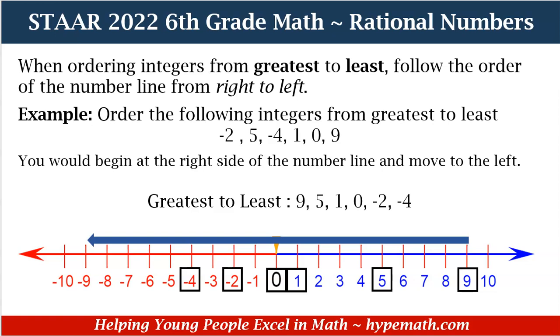So our list of numbers from greatest to least would be: 9, 5, 1, 0, negative 2, negative 4.